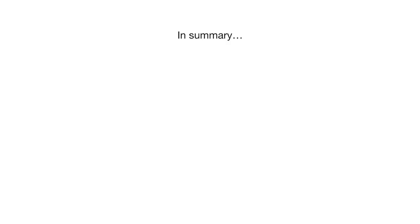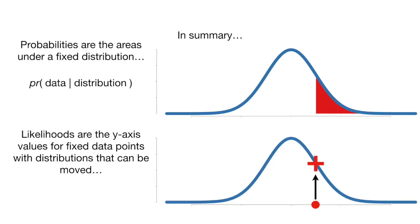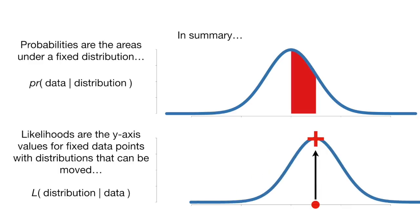In summary, probabilities are the areas under a fixed distribution. And mathematically, we have the probability of data given a distribution. Likelihoods are the y-axis values for fixed data points with distributions that can be moved. Mathematically, this is written as the likelihood of a distribution given data.